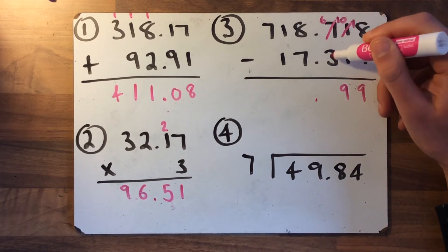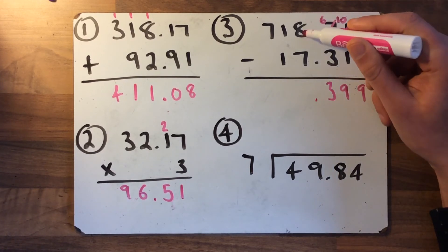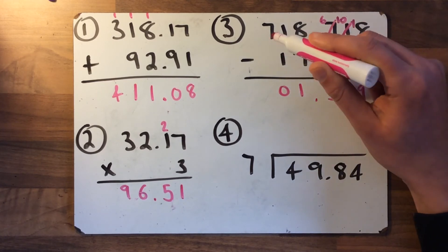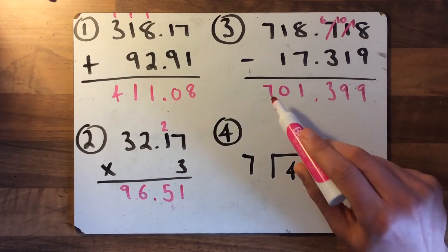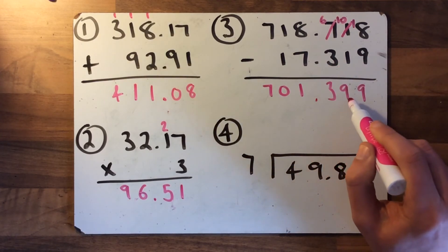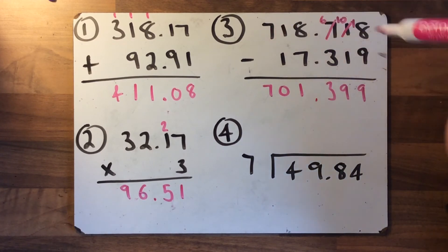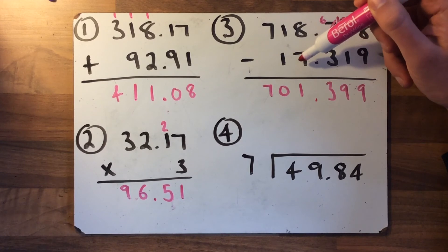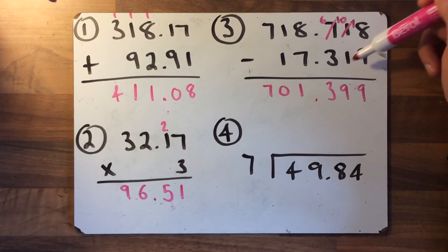is nine. Six take away three is three. I've already put my decimal point in. Eight take away seven is one, one take away one is zero, seven and there's nothing here, so seven take away nothing is seven—701.399. You can see it looks like a sensible answer, doesn't it? If you approximate, 718 take away 17 will be 701, and then you can see exactly what this is here—701.399.